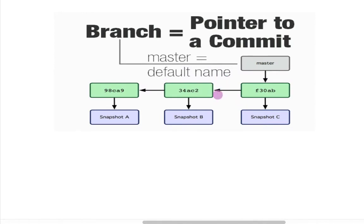Whenever we create a Git repository and there are a lot of commits, a default branch is created which is known as the master branch. What is a branch? A branch basically points to a commit. In this diagram, master is pointing to F30AB. When we say we are on the master branch, it means our branch includes the commits and the changes done in those commits.